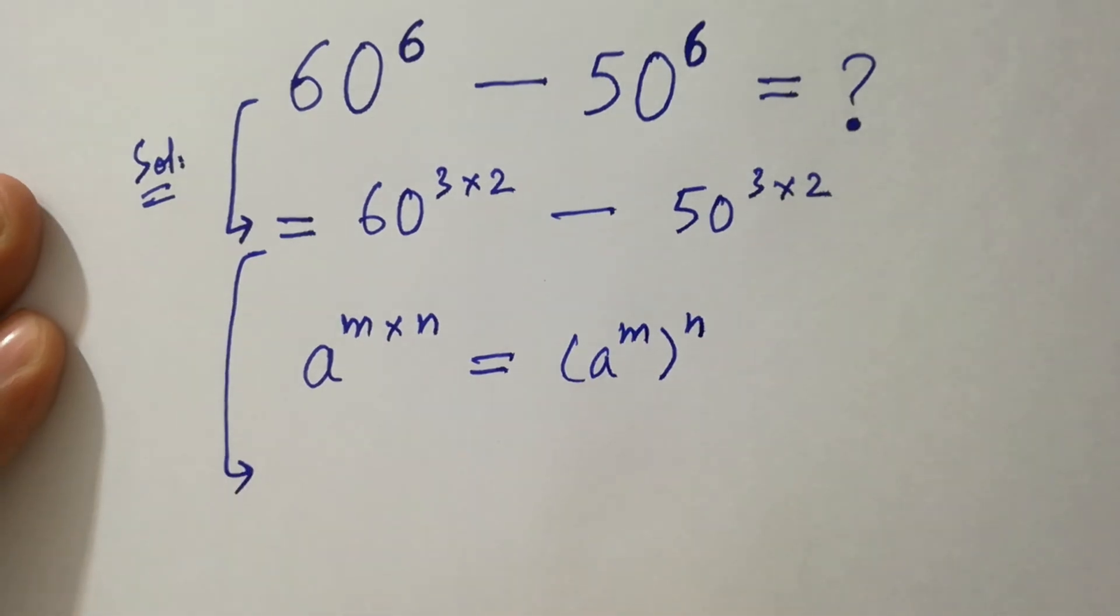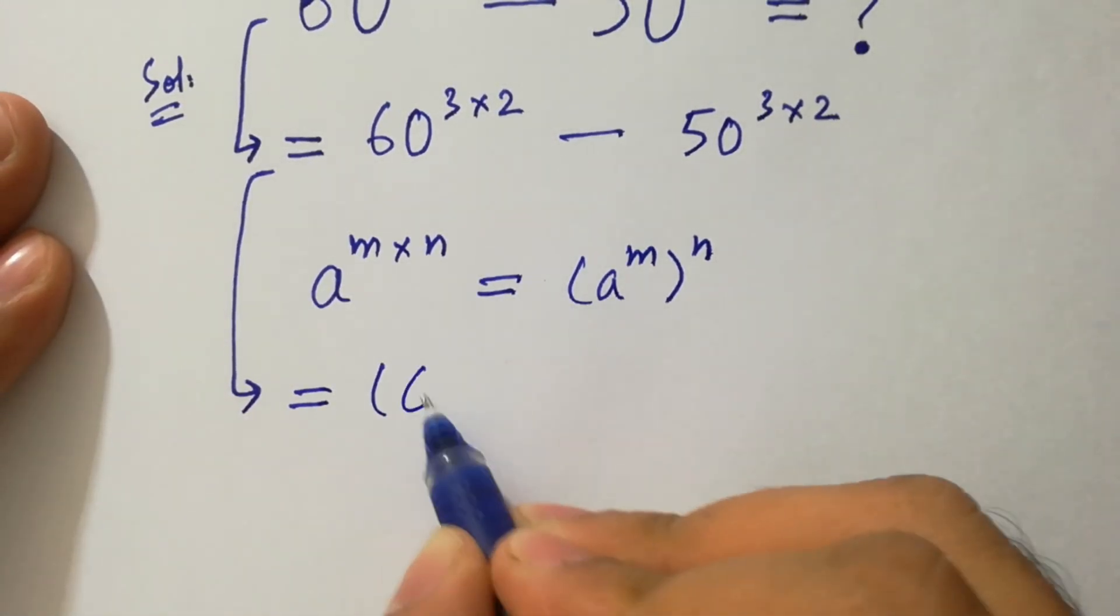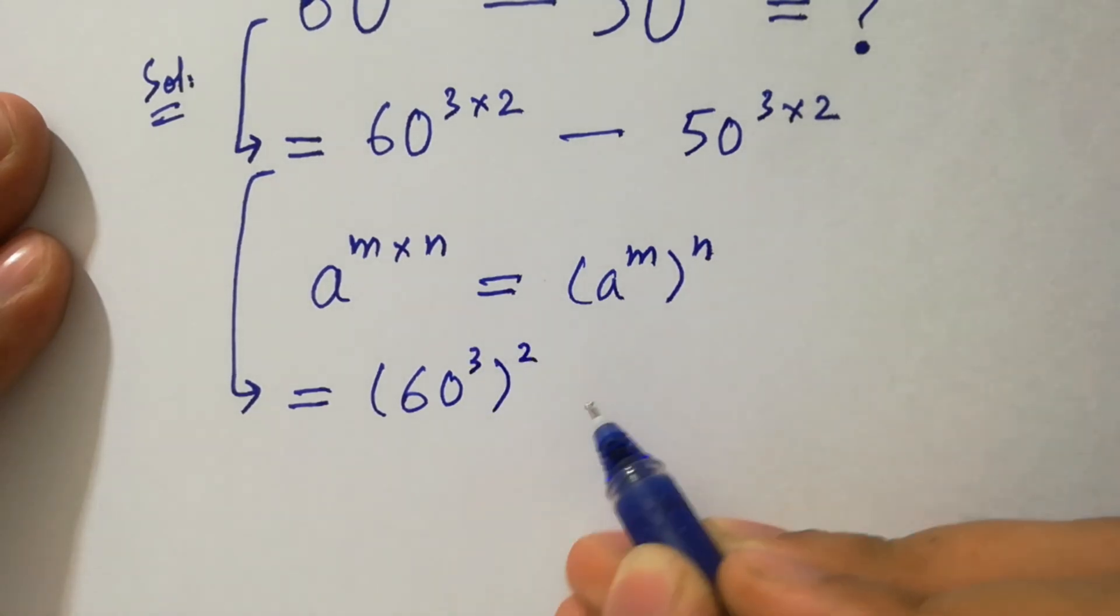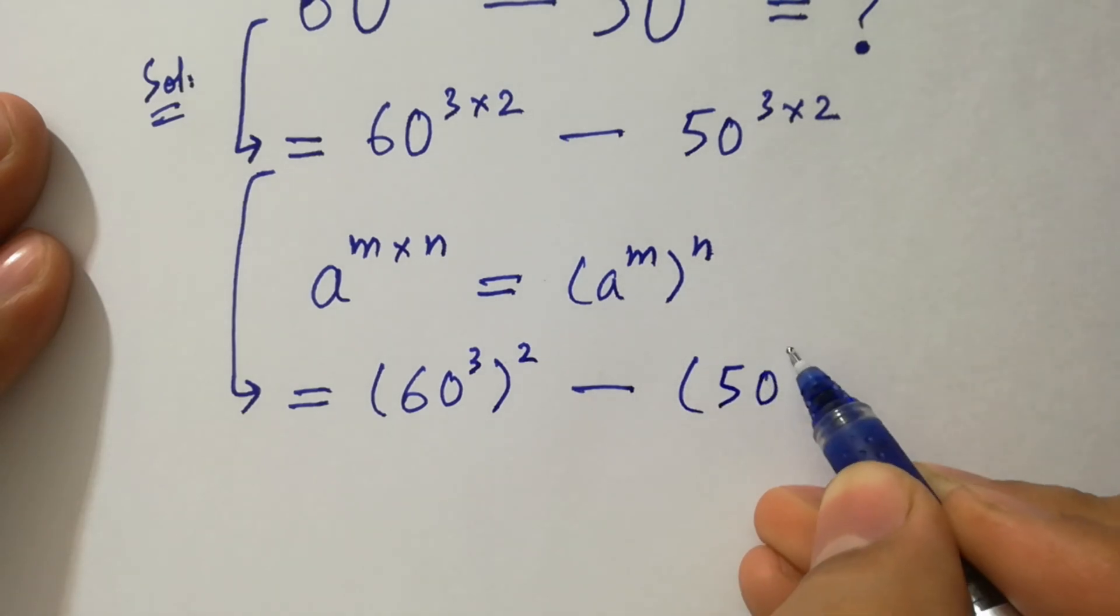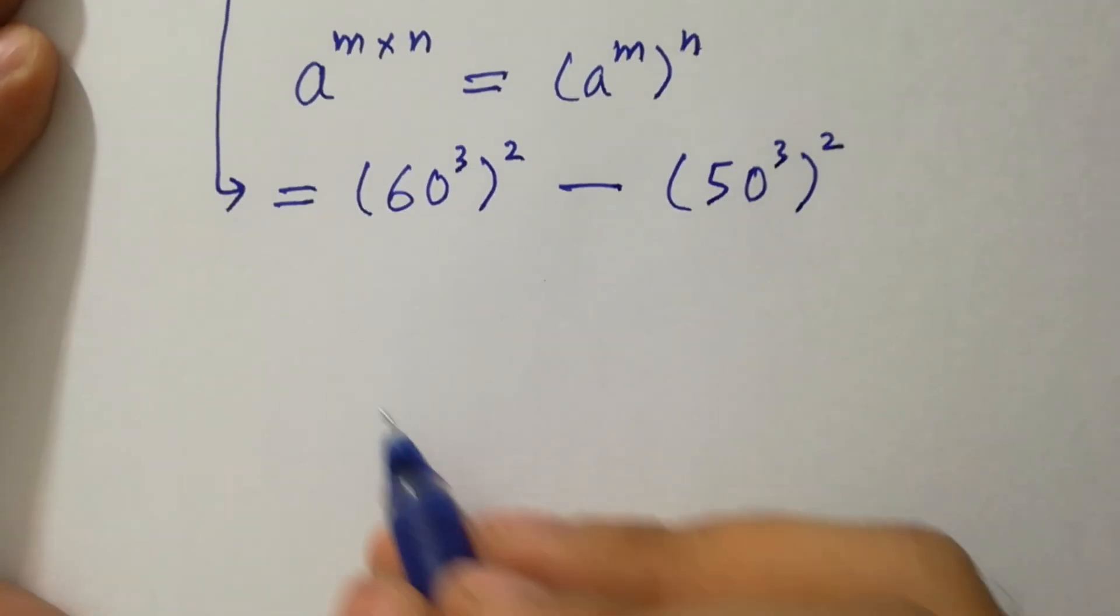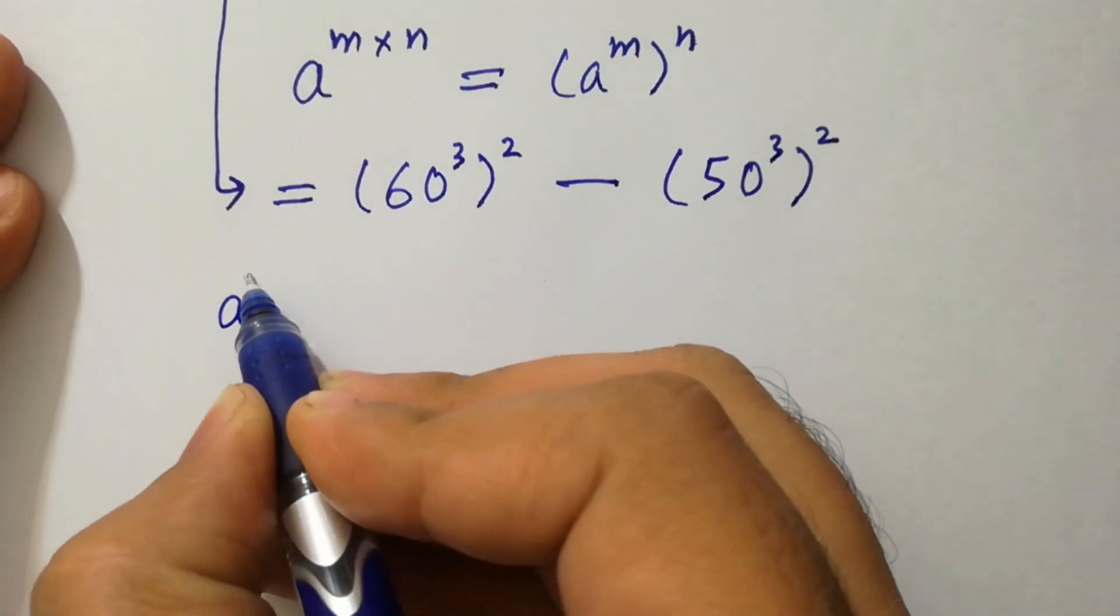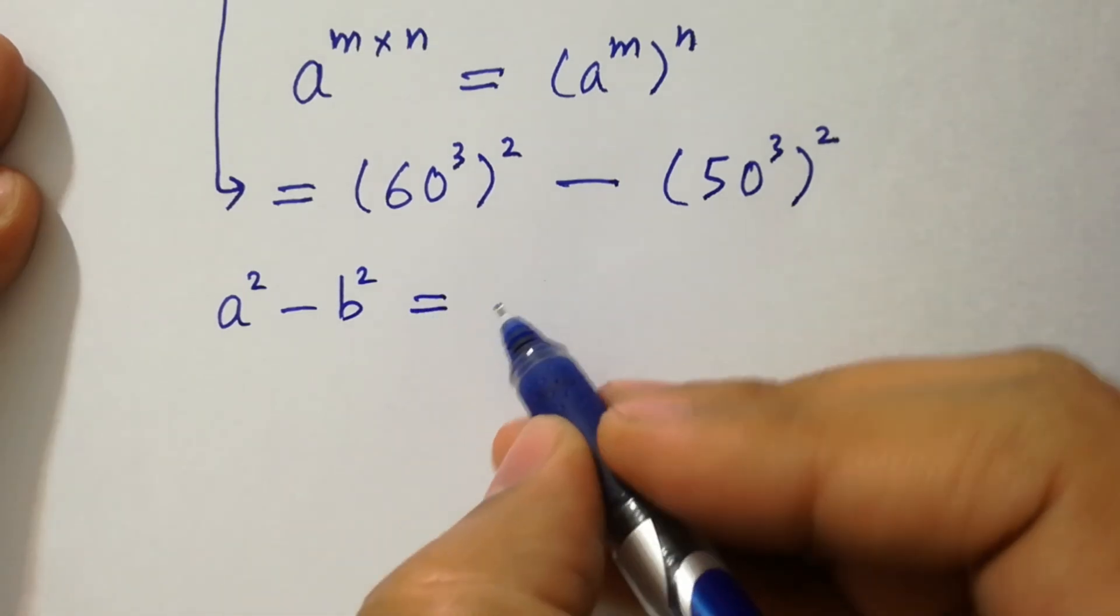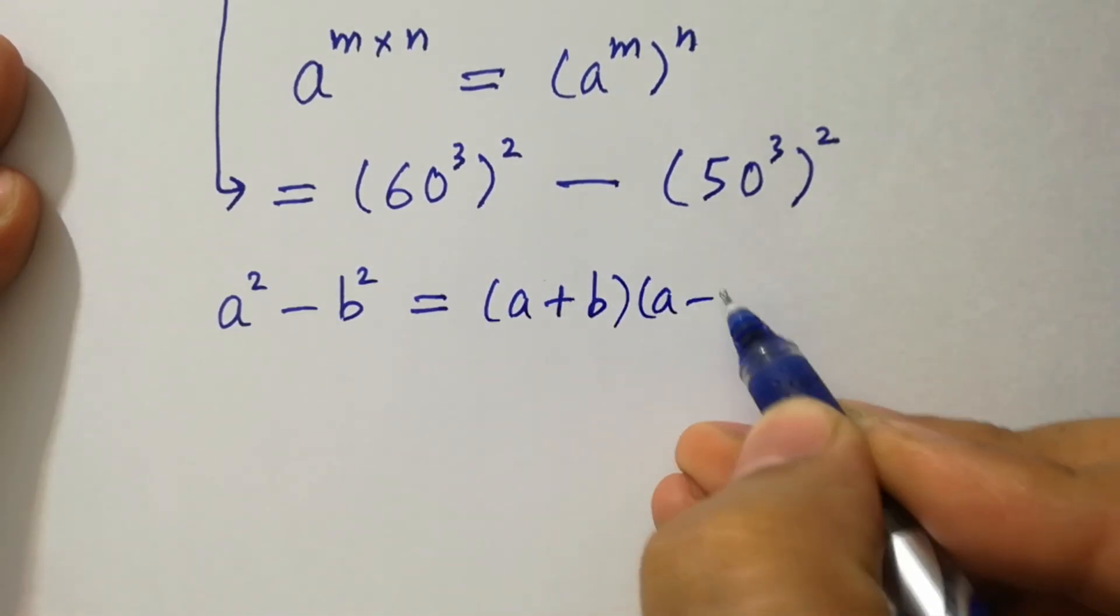Then it will be 60 to the power 3 to the whole power 2 minus 50 to the power 3 to the whole power 2. By this we know the formula of a square minus b square which is equal to a plus b times a minus b.